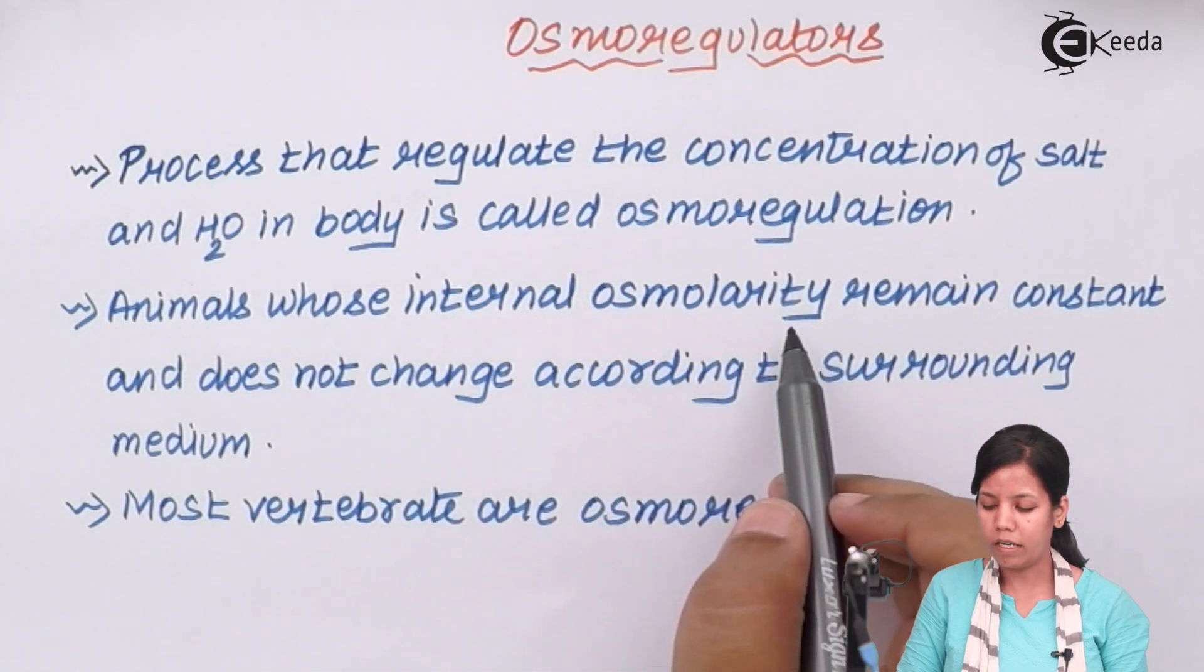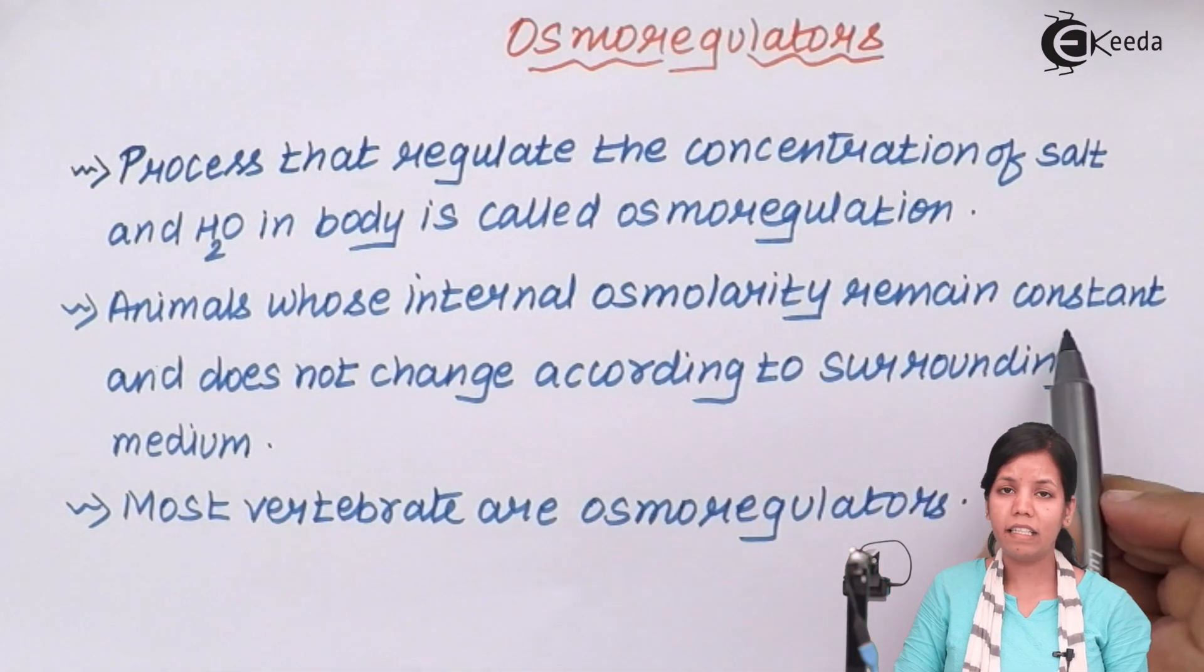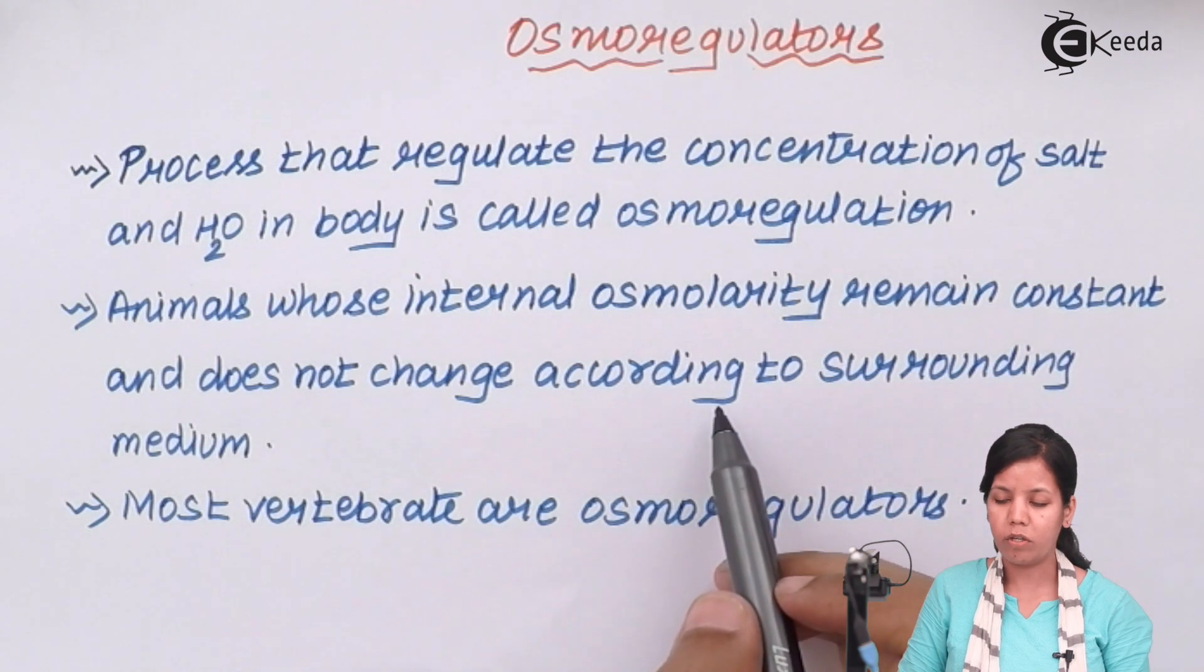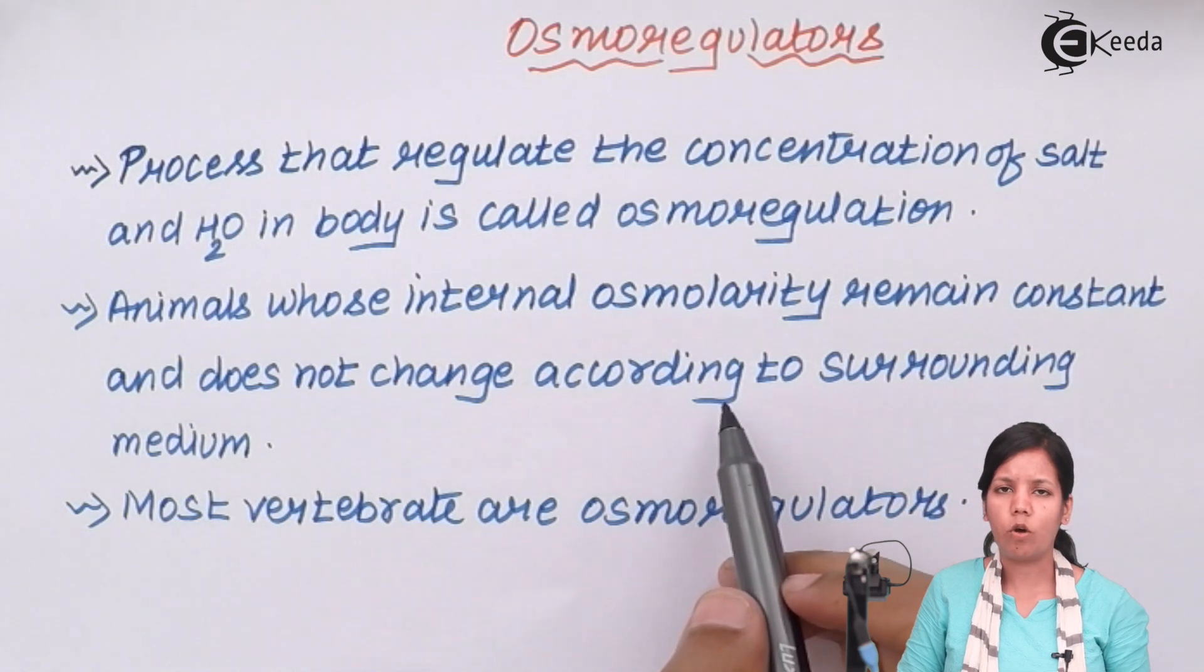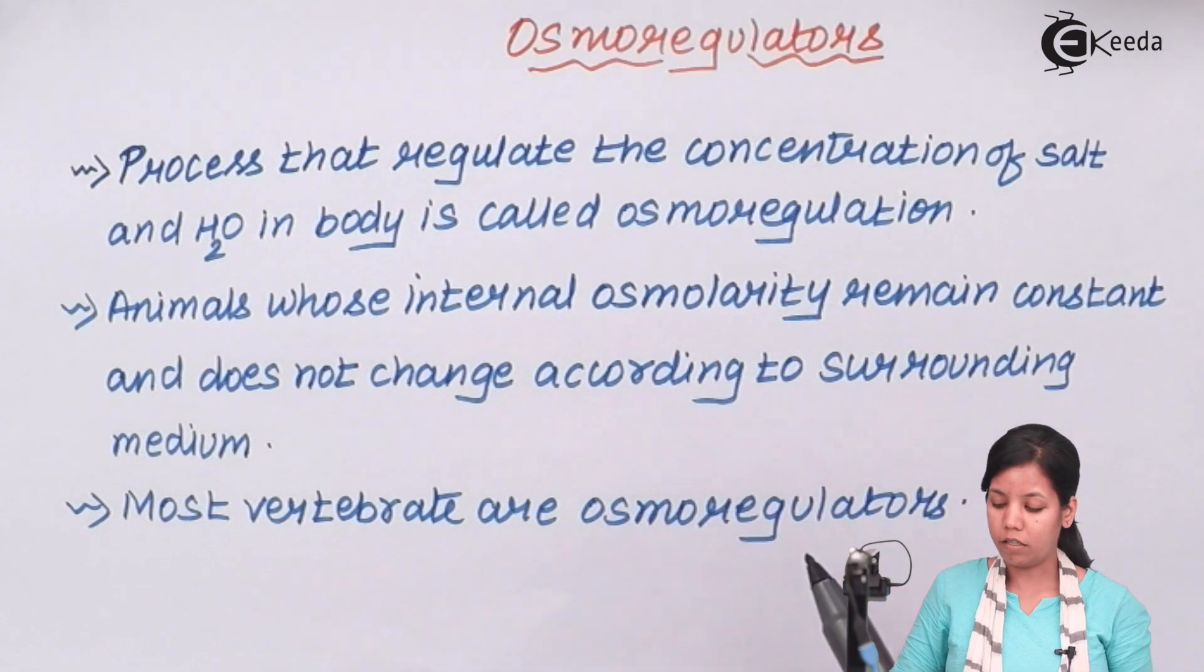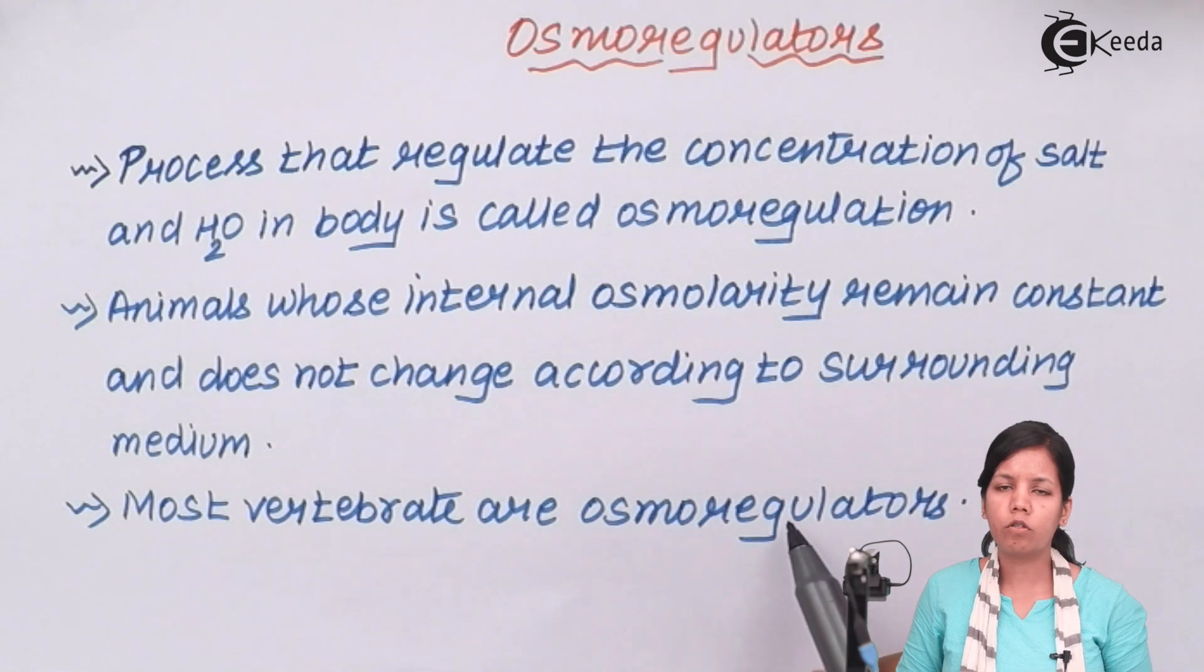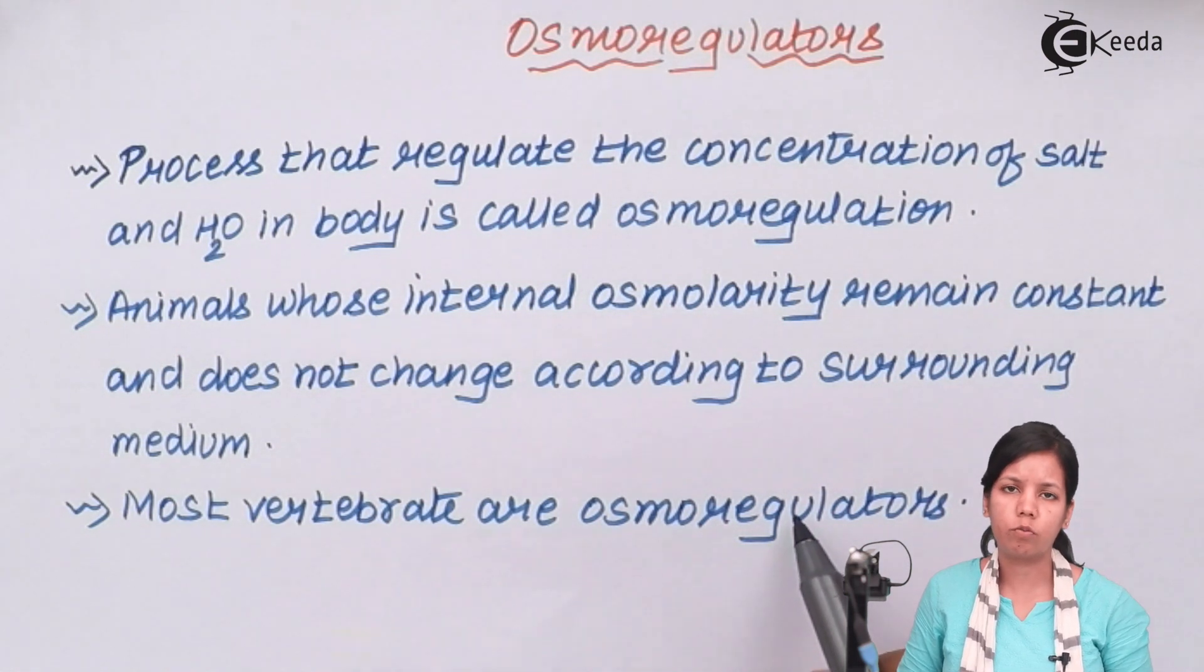Now animals whose internal osmolarity remains constant and doesn't change according to the surrounding medium. For example, if weathers change or your external atmosphere changes, that doesn't impact their osmolarity. Those are termed as osmoregulators and most of the vertebrates we talk about are osmoregulators. An example of this could be human beings.